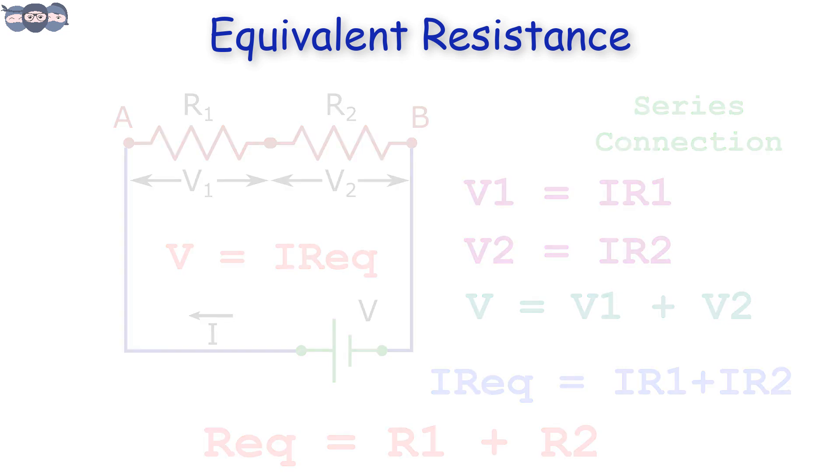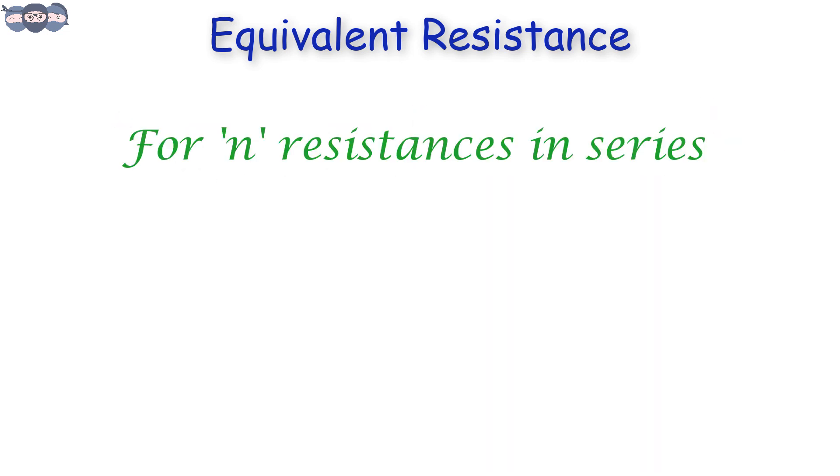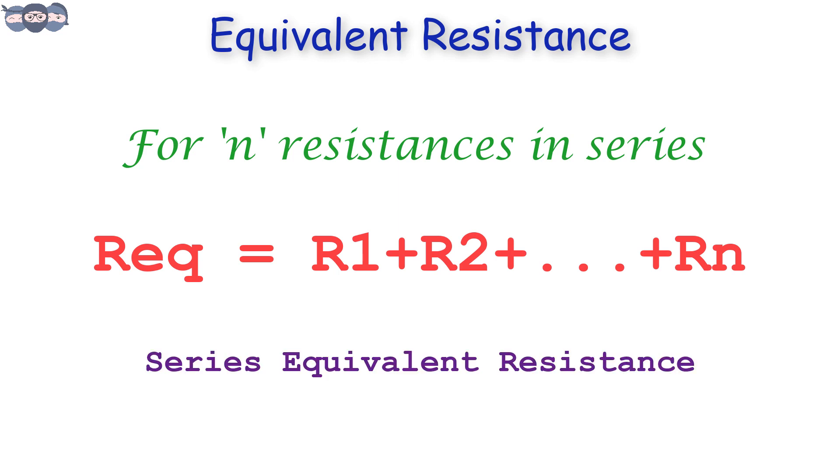The same formula can be extended to N resistances in series and its equivalent resistance can be calculated as R equivalent equals R1 plus R2 plus Rn. This is called series equivalent resistance.